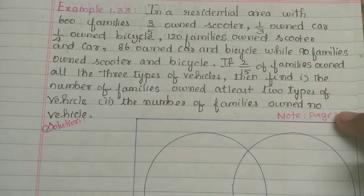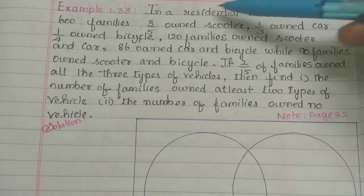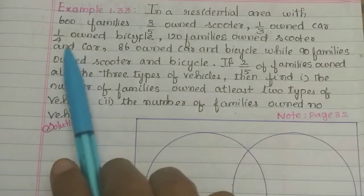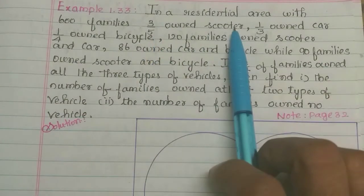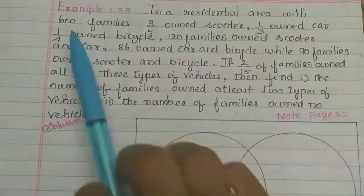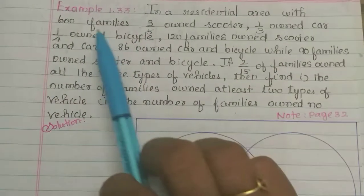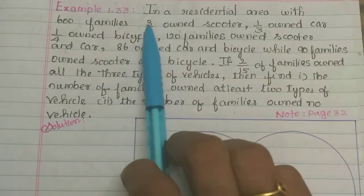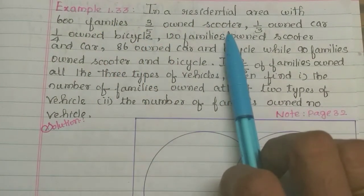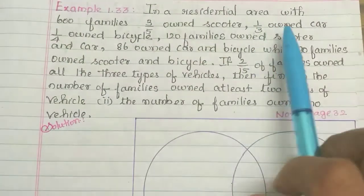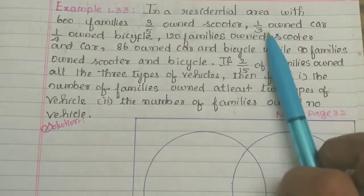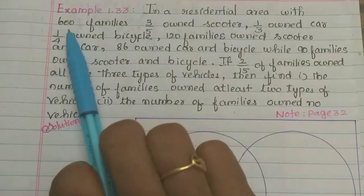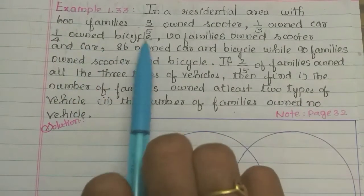Hi students. In this video we will see Example 1.33. In a residential area with 600 families, 3 by 5 owned scooters, 1 by 3 owned a car, and 1 by 4 owned a bicycle.